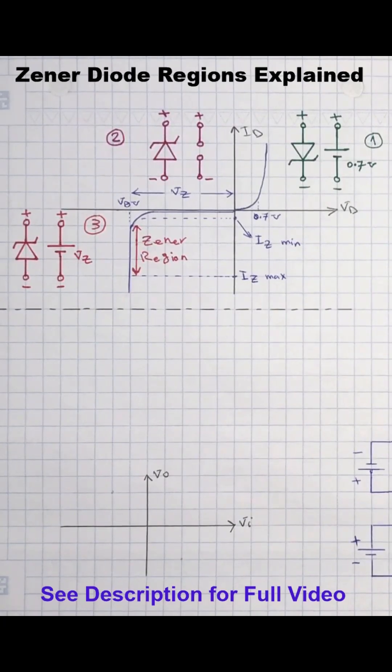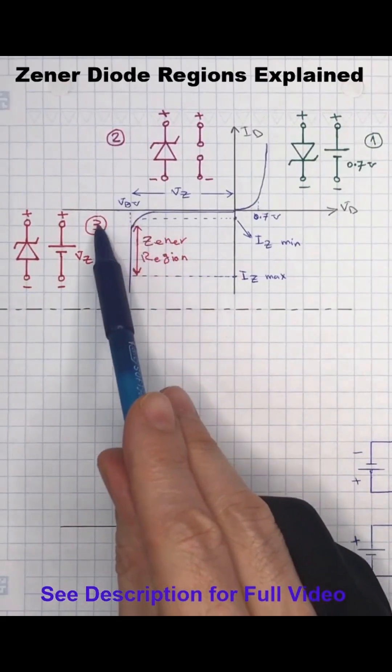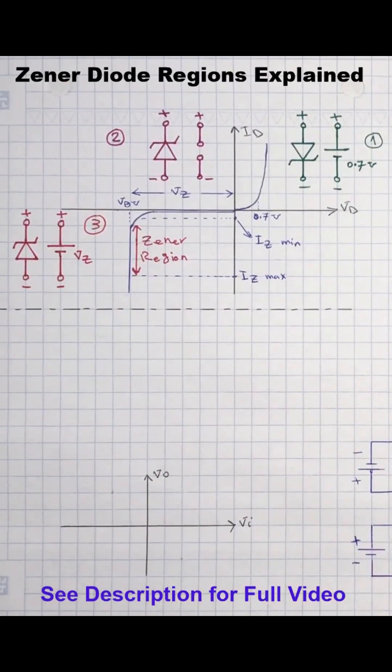The third region is Zener or breakdown. In this region the Zener diode is still reverse biased but by increasing the reverse potential it reaches a point where the Zener diode starts conducting rapidly.